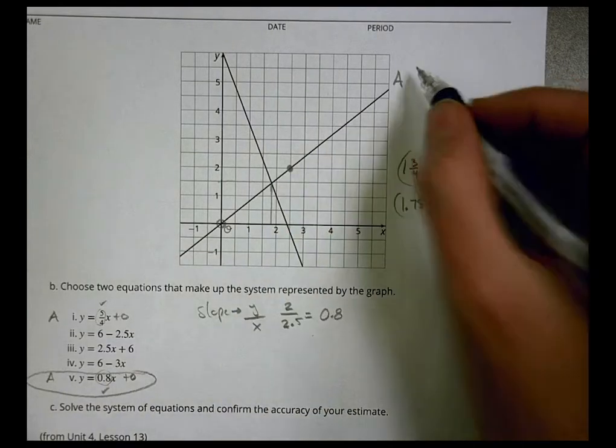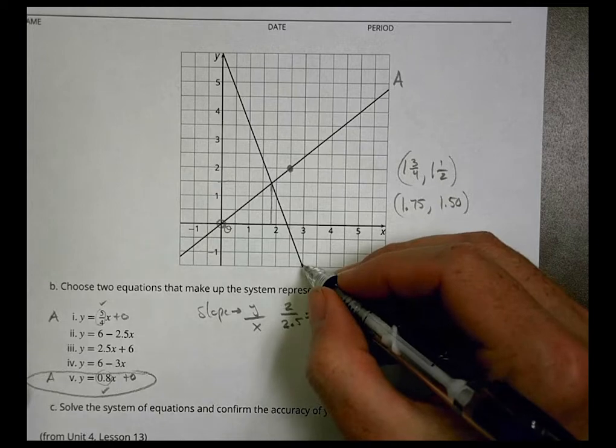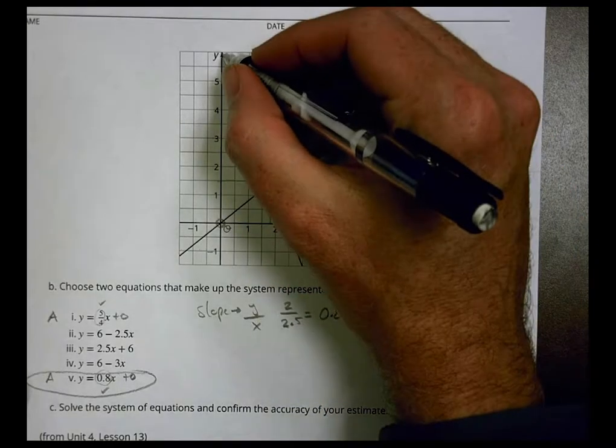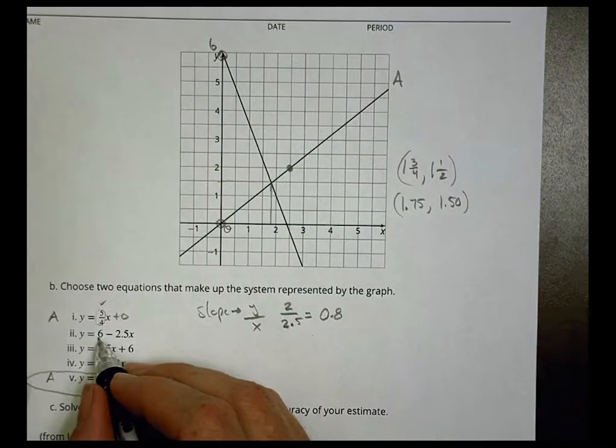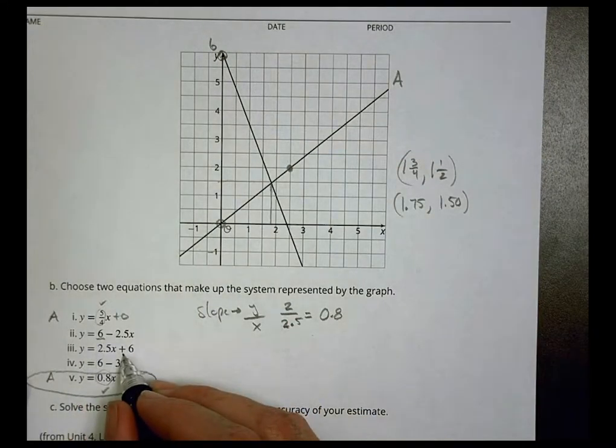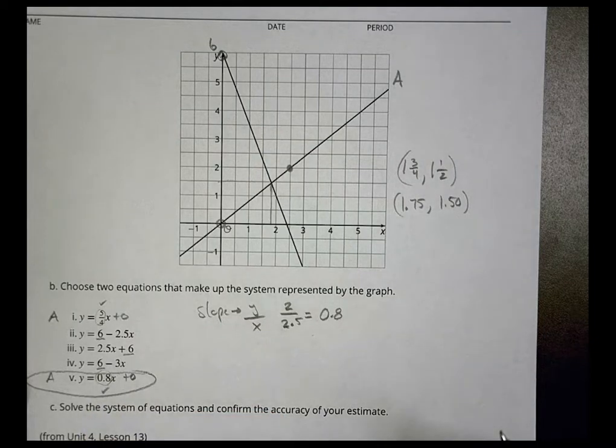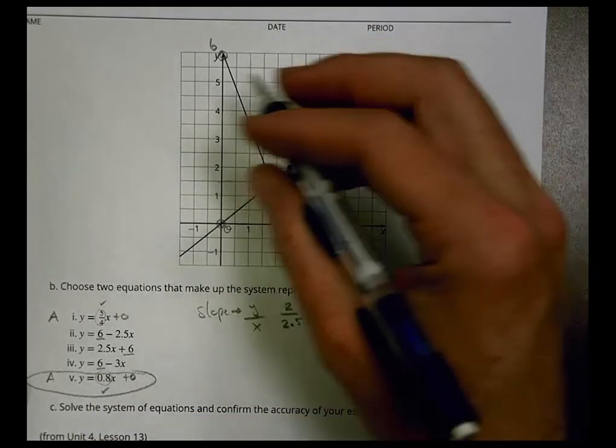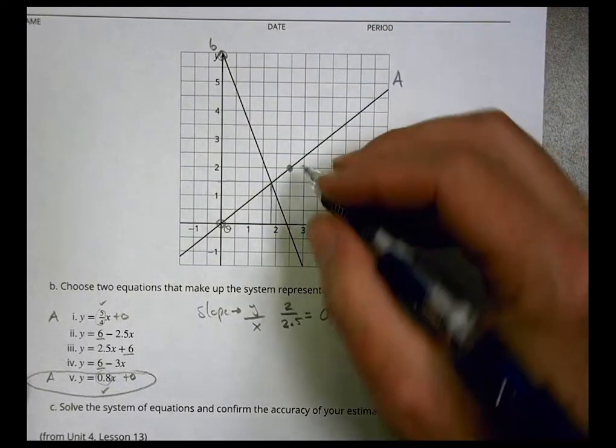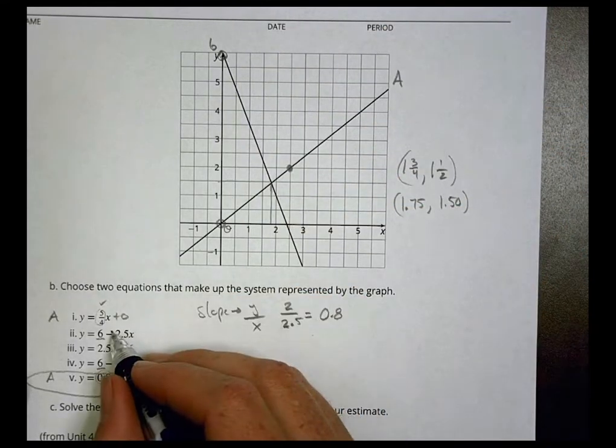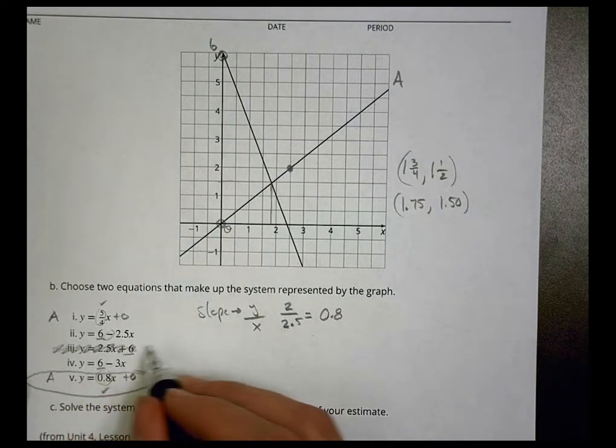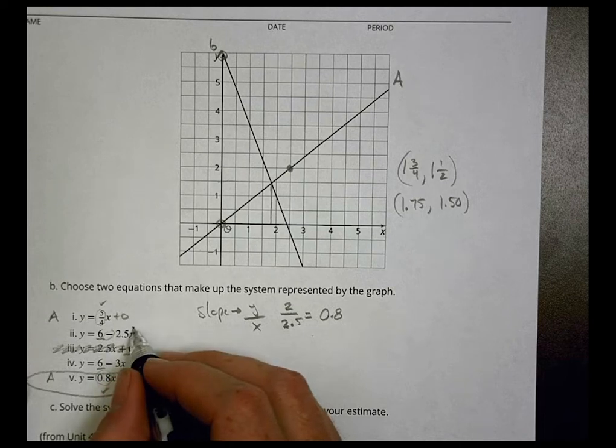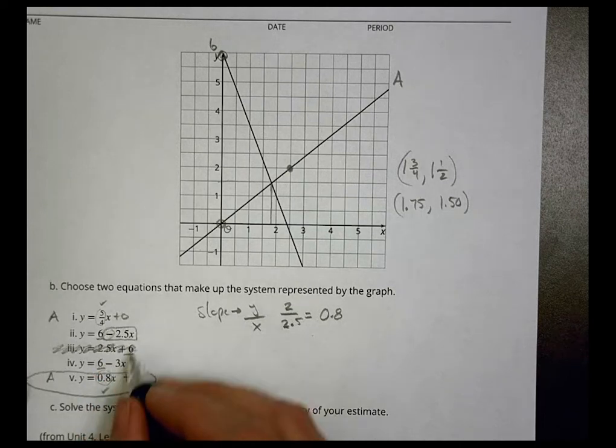The next one, we see where does it cross the y-intercept. We see it crosses right here at six. So we're looking for one with a y-intercept of six. We see this has a plus six, a plus six, and a plus six, so those are all possibilities. So far we also notice that this line is going down which means we need to have a negative slope. That has a negative slope, this one has a positive slope so that can't be it, and that has a negative slope there. So we're trying to debate between whether it's a negative 2.5x or a negative 3x, those are the differences there in terms of what's going on.